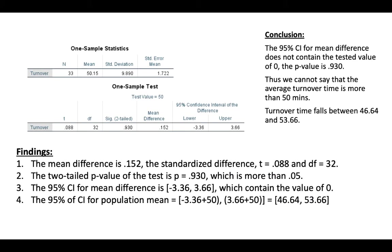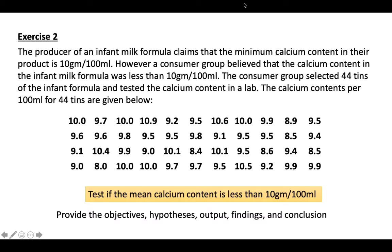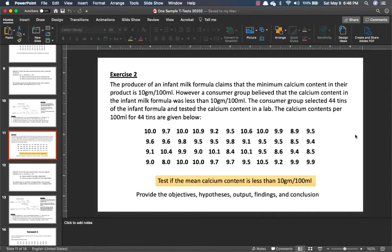Don't forget to write the APA results over here. Here's our second exercise. We want to see if the producer of an infant milk formula, they claim that the minimum calcium content in their product is 10 grams over every 100 milliliter. However, a consumer group believed that the calcium content in the infant formula was less than 10 grams per 100 milliliters. So the consumer group selected 44 tins, randomly selected 44 tins of the infant formula and tested the calcium content in the lab. The calcium contents per 100 ml for 44 tins are given below. So remember to provide the objective, hypothesis, output, findings as well as conclusion, or you can write the conclusion in an APA format. Do this as well for your homework.